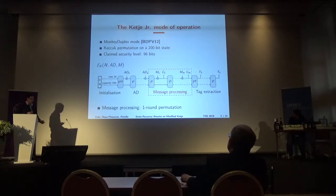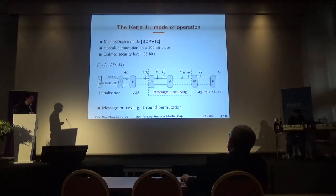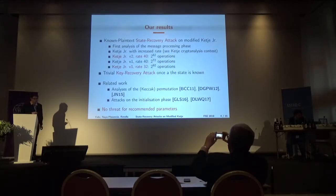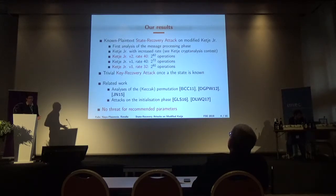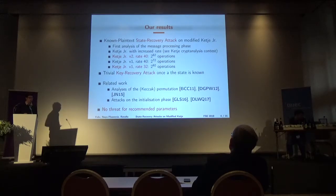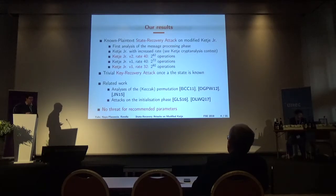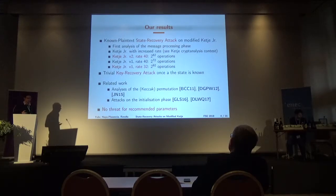During the message processing phase, only one round of the KETJER permutation is applied between each ciphertext output. Therefore it is completely irrelevant to try to attack round-reduced versions of this algorithm. What we did, and what was advised by the designers as part of the KETJER permutation contest, was to try to increase the rate — so a bit more bits for each block. Our paper is acknowledged as the first analysis of the message processing phase of the algorithm.